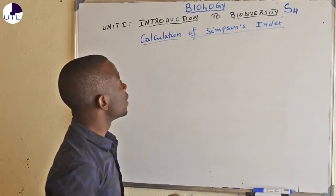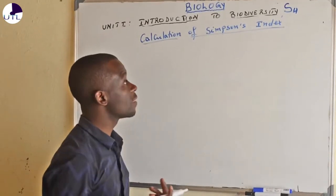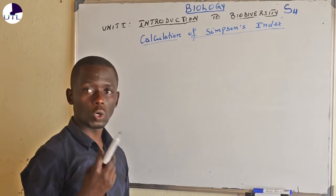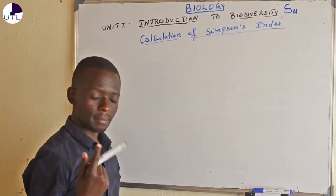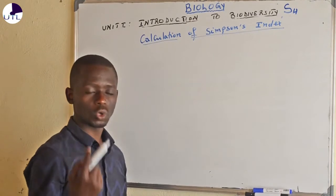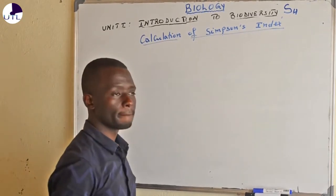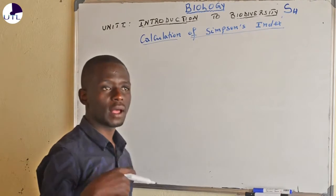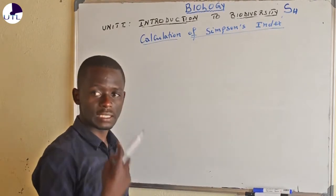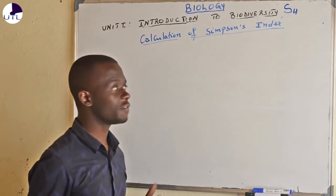Dear students, last time we saw what biodiversity is, we saw threats to biodiversity, the importance of biodiversity, we saw different types of biodiversity, and we saw what the effects might be when diversity is lost. Now we are going to see how to calculate biodiversity.